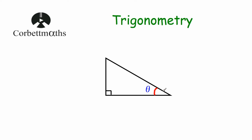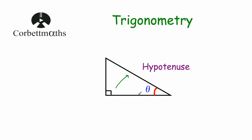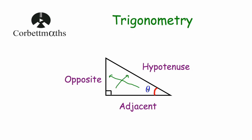Let's have a look at another triangle and label its three sides. So again, let's start off with the hypotenuse — here's our right angle, so the side opposite it will be the hypotenuse. Next, here's the angle that we're considering in the question, so the side opposite it will be called the opposite. And finally, the one side left — the bottom — is going to be the adjacent. So the hypotenuse is opposite the right angle, the opposite is opposite the angle we're considering, and the adjacent is at the bottom.